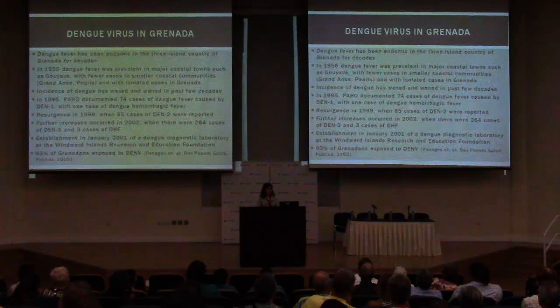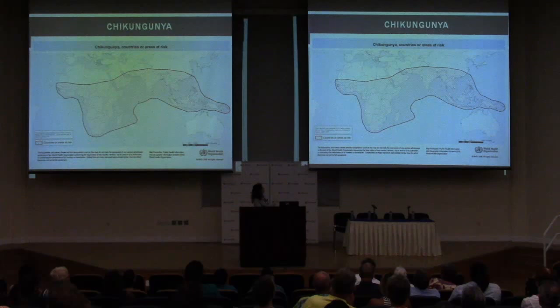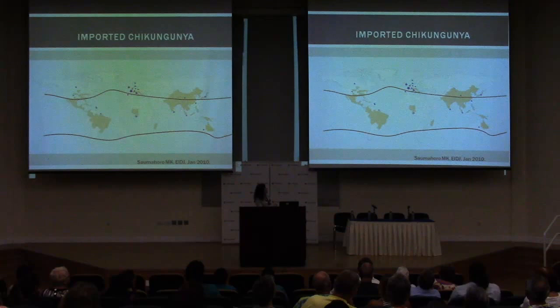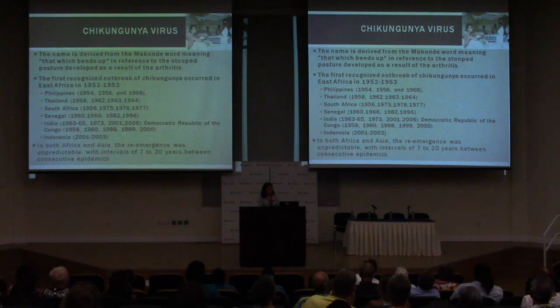A 2008 CDC map showing areas at risk for chikungunya shows the tropical world between the 10-degree isotherms — the same vector range as dengue. Chikungunya gets imported when people get sick in the tropics and then travel home. The name 'chikungunya' means 'that which bends up' in the Makonde language, referring to the stooped posture caused by arthritis and back pain. The first recognized outbreak occurred in East Africa in the 1950s, spreading throughout Southeast Asia and Africa with outbreaks at unpredictable intervals of seven to twenty years.